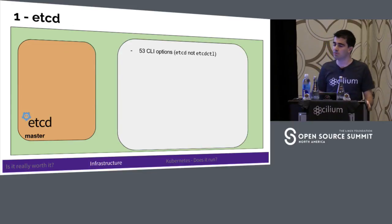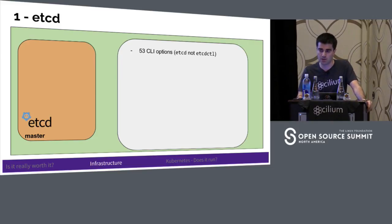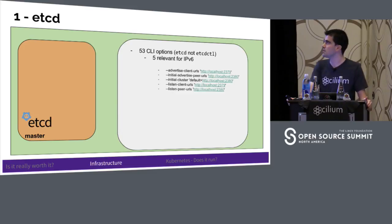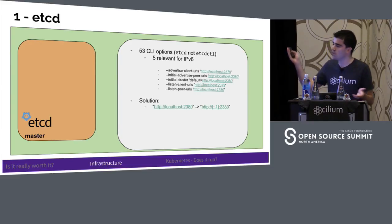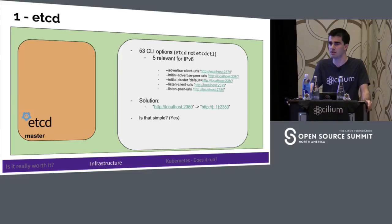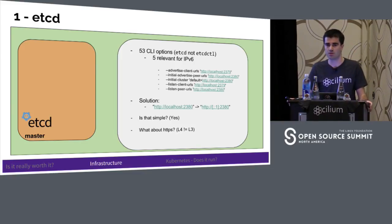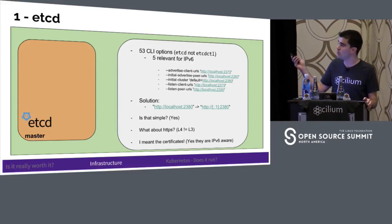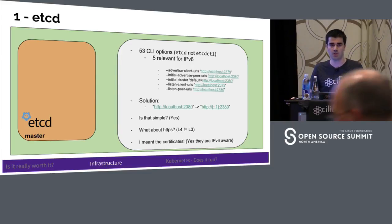Let's start with etcd on the master side. etcd has 53 CLI options — and I'm talking about etcd, not etcdctl, which is the client to connect to etcd. Out of those, only five are relevant for IPv6. These are mostly addressing options, and we can simply replace the address with the IPv6 localhost. If it works, it works. If not, you'll find out and can report it on a GitHub issue since this is all open source. Regarding HTTPS — HTTPS should not matter if it's running on IPv4 or IPv6. If you're talking about certificates, the configurations are aware of IPv6, so you can have an IPv6 address in the certificate itself.